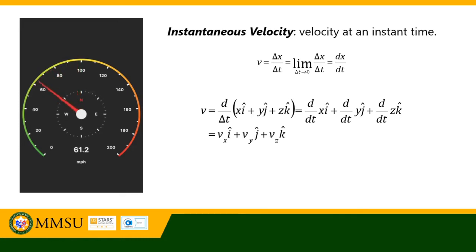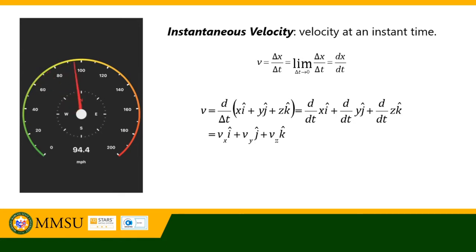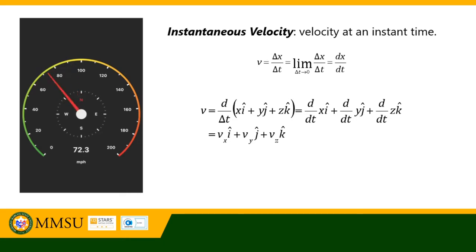Instantaneous velocity is defined as the average velocity during an infinitesimally short time interval. It is given by the equation: v equals the change in x over change in time, or the limit of the change in position with respect to time as the time interval approaches zero — that is, the derivative of position x with respect to time.